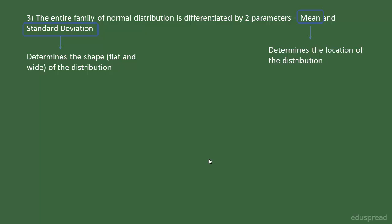Now comes the most important property of a normal distribution. Pay attention. The entire family of normal distributions is differentiated by two parameters: the mean and the standard deviation. Out of these two parameters, mean determines the location of the distribution, and the standard deviation determines how flat and wide the curve would be. Let me show you graphically what I mean by this.